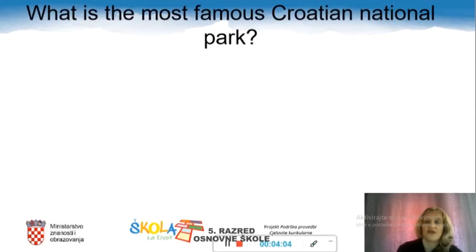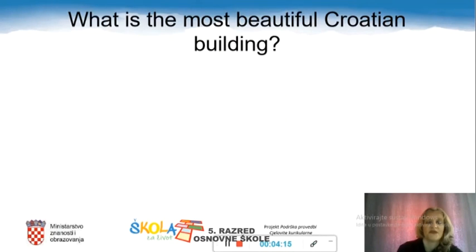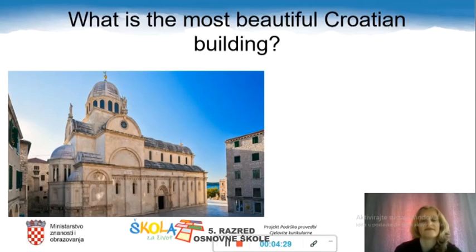What is the most famous Croatian national park? There are eight, and the most famous? Plitvice Lakes. What's the most beautiful Croatian building? Well, that's difficult, but people say the most beautiful Croatian building is in Šibenik — the Cathedral of St. James.